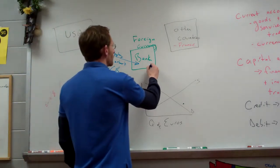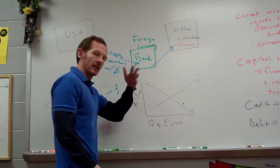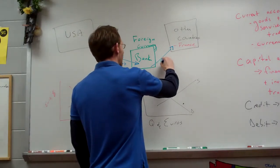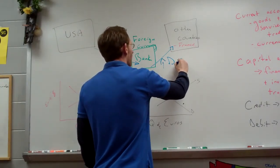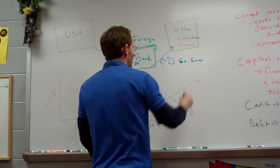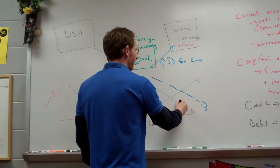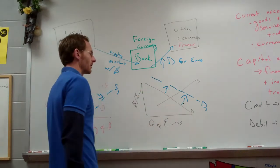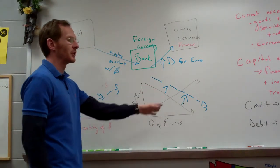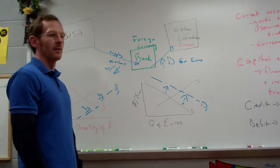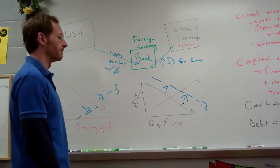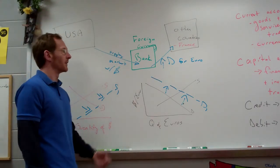And then we're going to demand euros so we can spend them in France. So there's going to be an increased demand for euros. And we show this on the graph by increasing the demand for euros. So we've increased the demand for euros, which has appreciated the relative price of the euro or the weight of its currency.